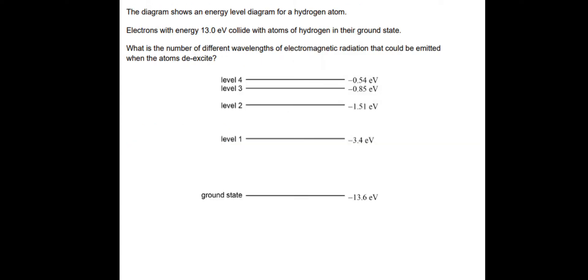Next question — pause and have a go. The diagram shows an energy level diagram for a hydrogen atom. Electrons with energy 13 eV collide with atoms of hydrogen in their ground state. What is the number of different wavelengths of electromagnetic radiation that could be emitted when the atoms de-excite? The electrons in the ground state will move up into different energy levels, spend a very short time there in the microsecond range, then come back down, emitting photons. With 13 eV of energy, we do 13.6 subtract 13 = 0.6 eV, so the electron can't reach level 4 — it ends up at level 3.